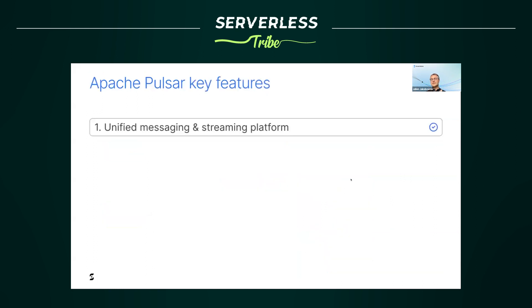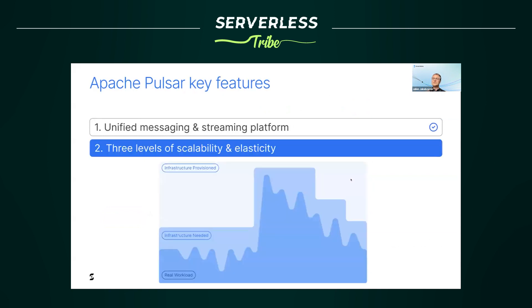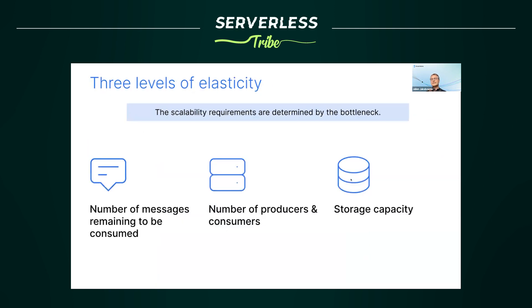Pulsar can handle both messaging and streaming use cases — this is one of its key features. Now let's talk about Pulsar's scalability and elasticity. Elasticity means you can grow or shrink resources quickly to adapt to workload changes, saving infrastructure costs by avoiding over-provisioning. Some platforms like Kafka and Pulsar can scale very well, but Pulsar is both scalable and elastic. The bottleneck determines what you need to scale: the number of messages remaining to be consumed, the number of topics or client connections, or the storage capacity.